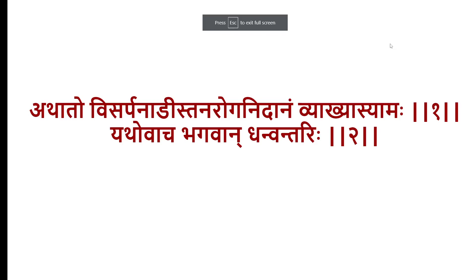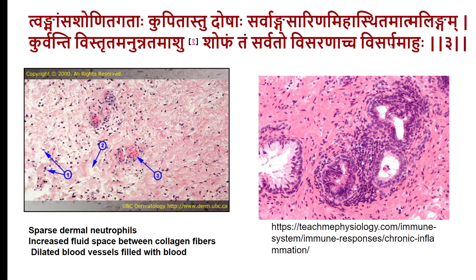The next topic is about Visarpa — Nadi Roga Nidanam. The Sanskrit verse states: when the superficial tissues (Tokamamsa) are affected and there is a tendency for the toxin to spread throughout the body (Sarvanga Sarinam), producing a widespread flat lesion (Anunnatam), such a condition is called Visarpa.